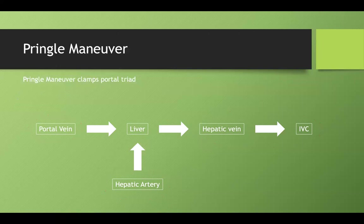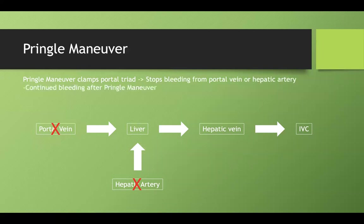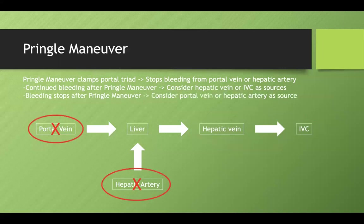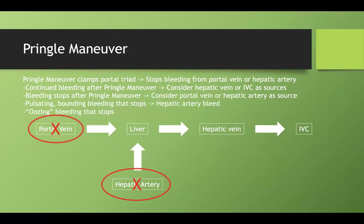To determine what is actually bleeding, you can clamp down on the portal triad — the common bile duct, proper hepatic artery, and portal vein. If bleeding continues after clamping, it's more likely the hepatic vein or IVC. If bleeding stops, it's the portal vein or hepatic artery. To differentiate those two: a pulsating, bounding bleed points to the hepatic artery, while an oozing bleed that stops with the Pringle maneuver suggests a portal vein bleed.